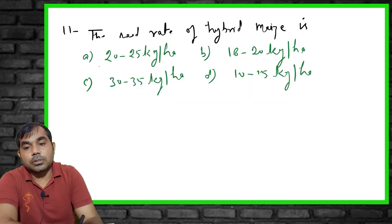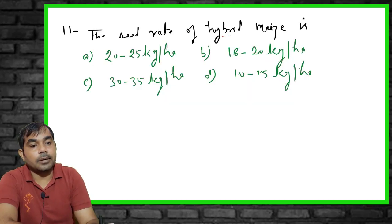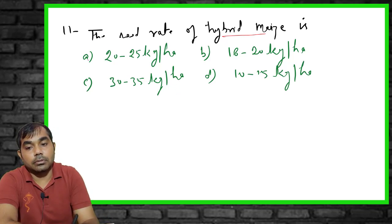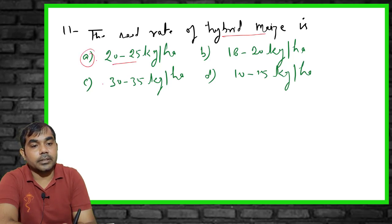The eleventh MCQ asks about the seed rate for hybrid maize. The right answer is 22 to 25 kg per hectare — that is the seed rate required for hybrid maize.